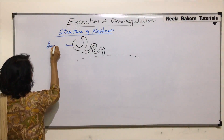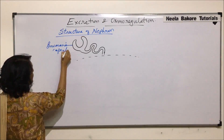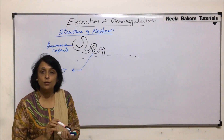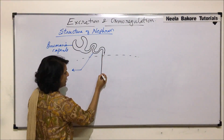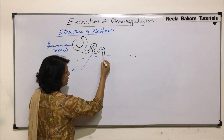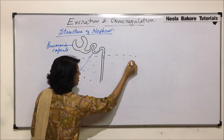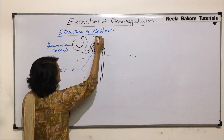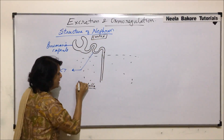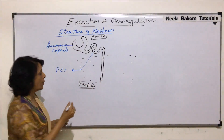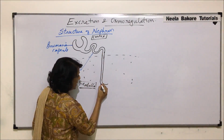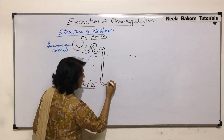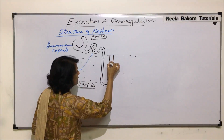Let us label this. This is Bowman's capsule. This first coiled part is PCT, and the proximal convoluted tubule leads into the loop of Henley, which gets into the medulla part. This lower part is the medulla region, and the upper part where Bowman's capsule is located is the cortex — renal cortex and renal medulla. This arm of the loop of Henley comes down, bends, and then goes up. When going up, it is slightly wider compared to the tube coming down, and here it becomes wide as it goes back up towards the cortex.